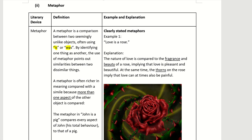Let's take a look at the first type of metaphor — the one that is clearly stated. For example, 'love is a rose.' How is love like a rose? If you find a rose is very beautiful and smells sweet,